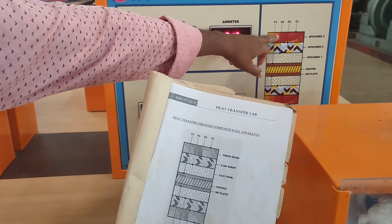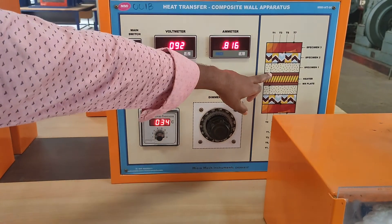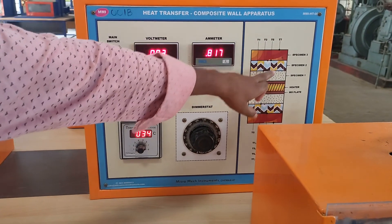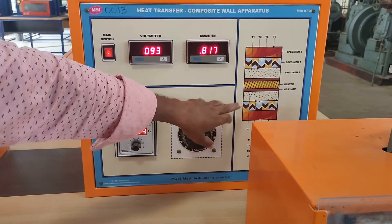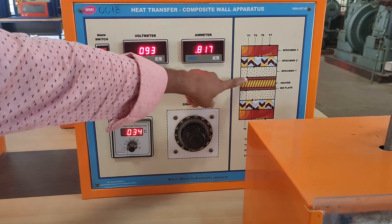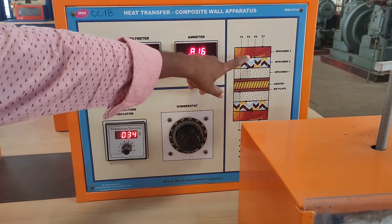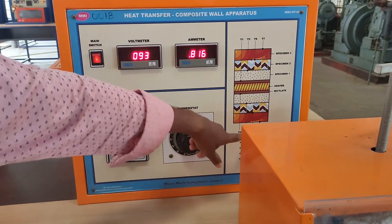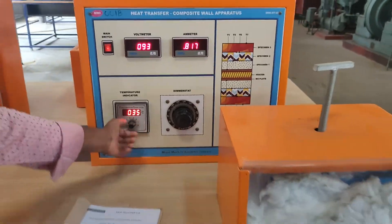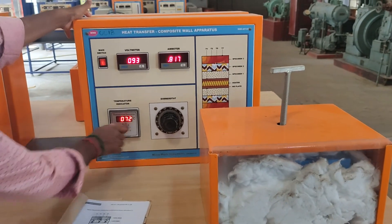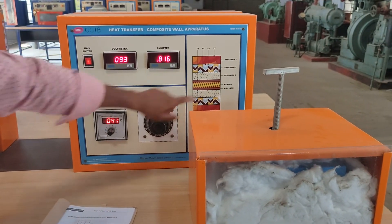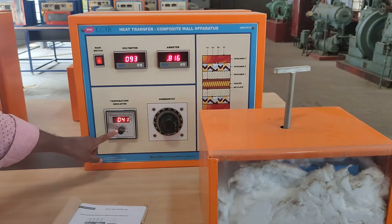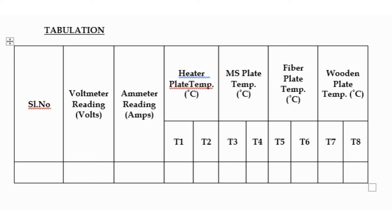T1 is the temperature of the mild steel plate, and T2, T3, T4, T5, T6, T7, and T8 are the temperatures at various places of the specimens. After 20 minutes, with the help of the temperature selector switch, readings from T1 to T8 are noted. Using these tabulated values, we can calculate the total thermal resistance and heat transfer through the composite wall structure.